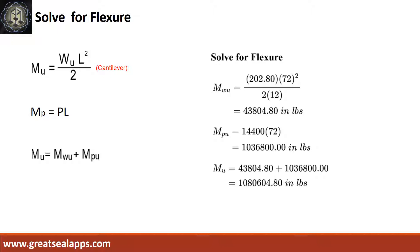The maximum moment from uniform load is 43,804.8 inch pounds. The maximum moment from concentrated load is 1,036,800 inch pounds for a total maximum design moment of 1,080,604.8 inch pounds.